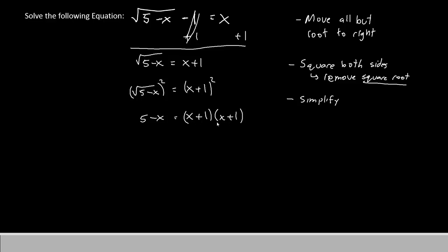To continue simplifying, we'll need to FOIL the two parentheses together. You might have seen this one before, but I'll demonstrate again. x times x is x squared. x times 1 is 1x. 1 times x is also 1x, and 1 times 1 is 1. The left side stays the same. We can simplify a little bit further here and combine the x terms together to make x squared plus 2x plus 1.